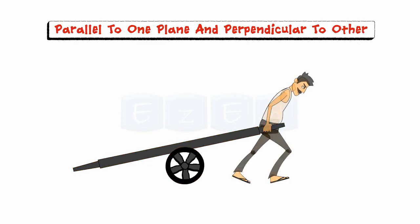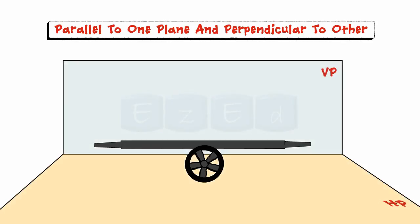Now observe the person holding the handcart in this position. The rectangular plane is parallel to the HP and perpendicular to the VP.